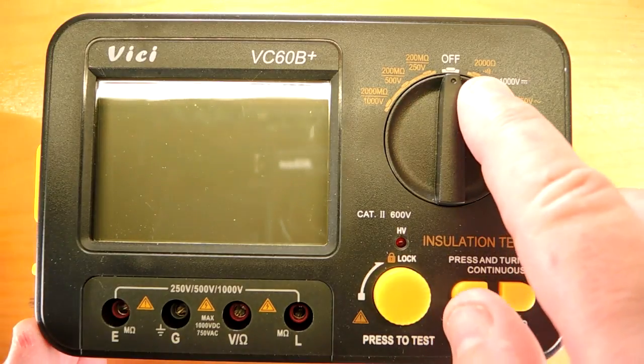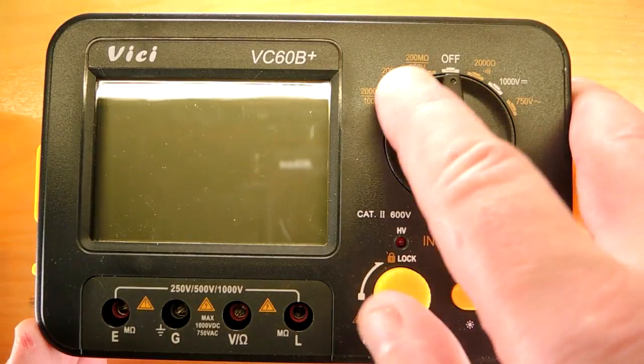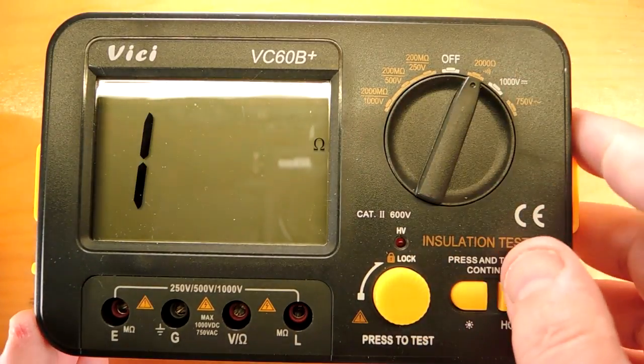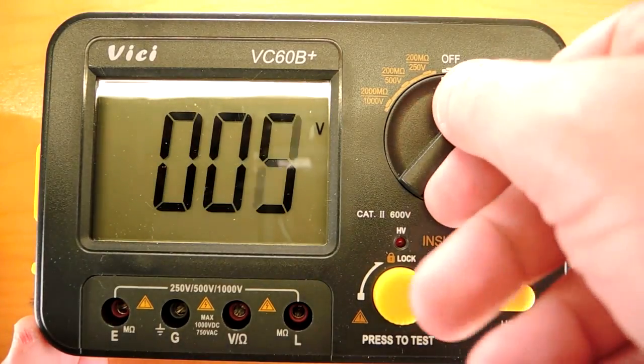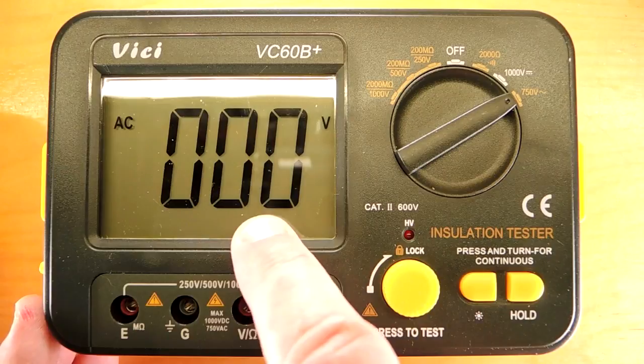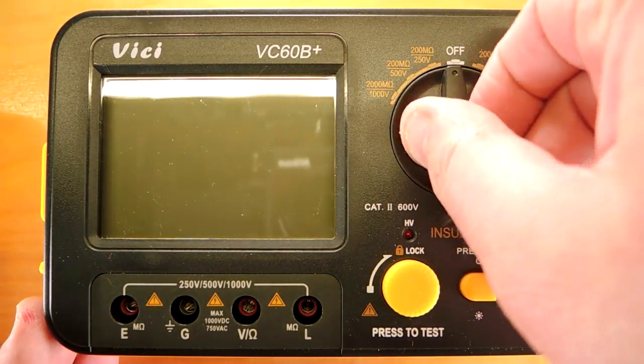So just to review the operation, there's a normal multimeter function on this side, and then the insulation testing or mega-ohm meter on this side. Over here we have an ohm meter, a DC meter, and an AC meter. There's no digits, so the resolution of this side isn't particularly great. But what's really special about this meter is on this side.